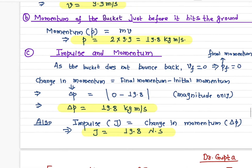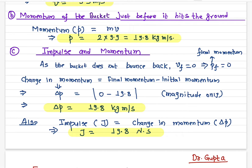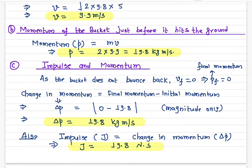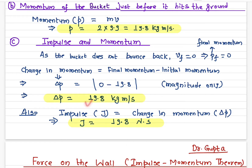The change in momentum equals final momentum minus initial momentum. The final momentum is zero and the initial momentum — just before hitting the ground — is 19.8 kg·m/s. Taking only the magnitude, the change in momentum is 19.8 kg·m/s.